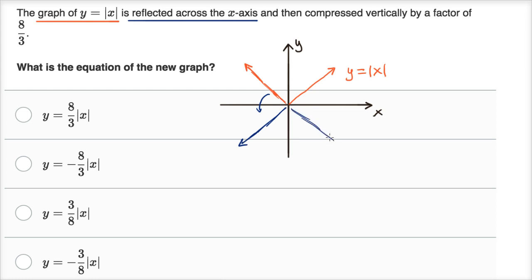So that graph, that equation that describes this graph, well this is going to be the opposite. Whatever y you were getting on this orange graph, you're going to get the negative of that. So you're going to get y equals the negative of the absolute value of x.